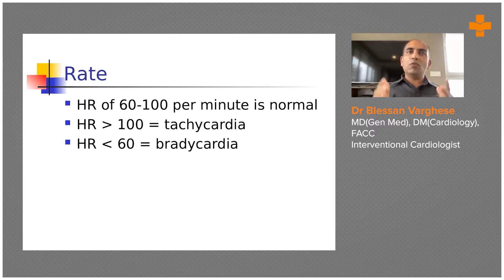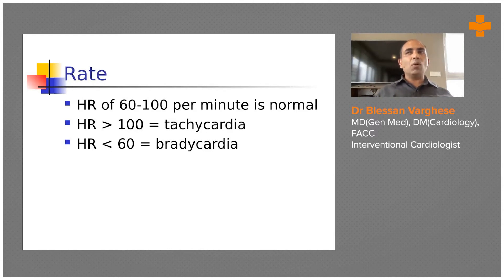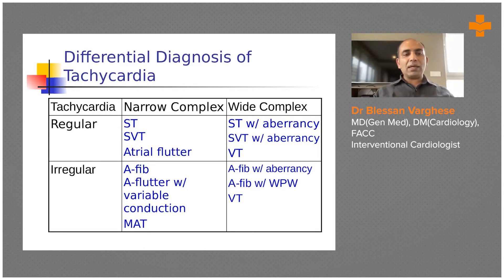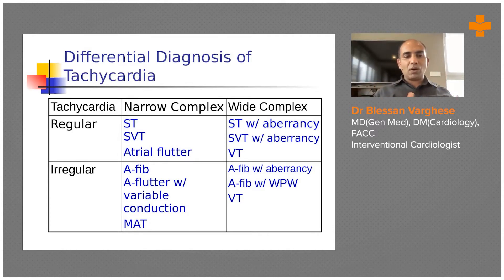Unless there is a heart rate-reducing medicine like beta blockers, the sinus node's intrinsic rhythm falls between 60 to 100. Heart rate more than 100 is tachycardia; heart rate less than 60 is bradycardia. Tachycardia is divided into two categories based on the duration of the QRS complex — we look at whether it is a narrow complex tachycardia or a wide complex tachycardia.